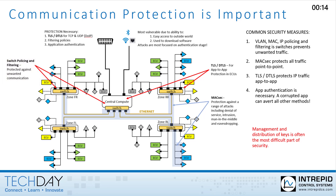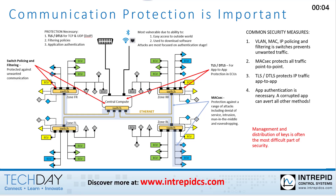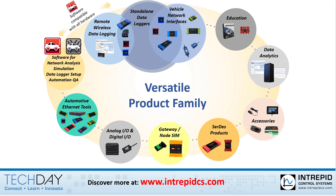All of these technologies mentioned provide the framework for a reliable, fully functional, and secure zonal network architecture. There you have it — vehicle zonal architecture in five minutes. Intrepid Control Systems has been in the business of serving the automotive networking community for almost 30 years, with the latest tools such as media converters, vehicle network adapters, in-vehicle data loggers, simulators, data analytics, and much more. Please contact your local office for more information. We thank you for your time.